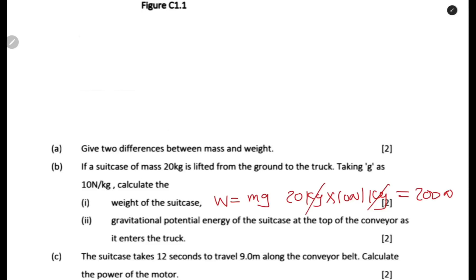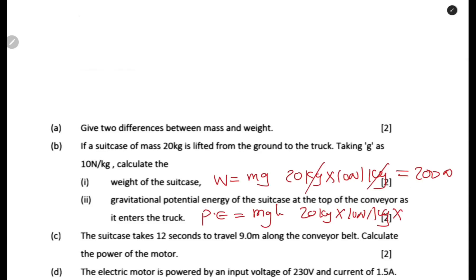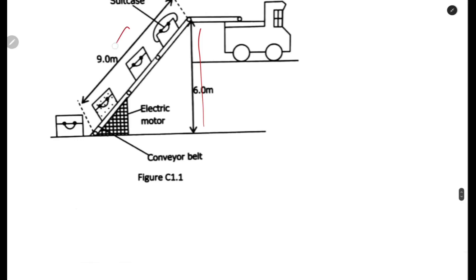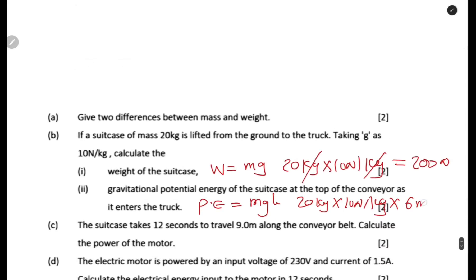Calculate the gravitational potential energy of the suitcase at the top of the conveyor belt. GPE = mgh = 20 kg × 10 N/kg × 6 meters. We pick the vertical distance, which is 6 meters. This gives 1,200 joules.